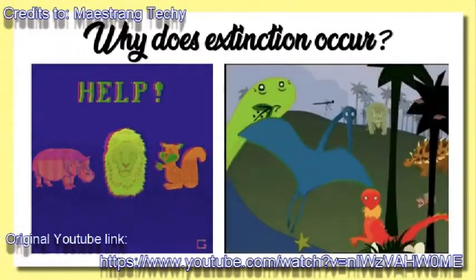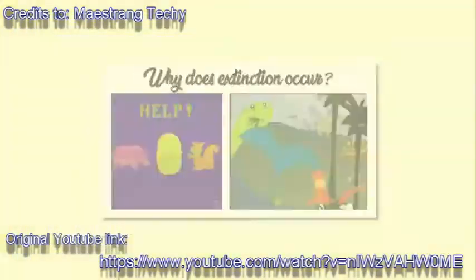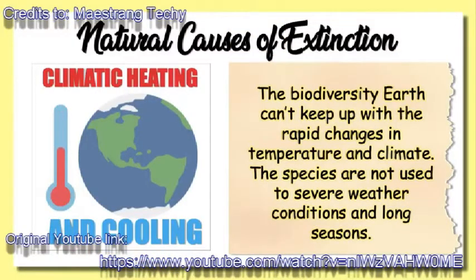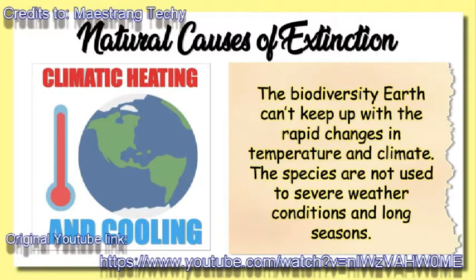The question is, why does extinction occur? Here are some of the natural causes. The first one is climatic heating and cooling. Climate change is caused by a number of things. The effect that climate has on extinction is very big. The biodiverse Earth cannot keep up with the rapid changes in temperature and climate. Species are not used to severe weather conditions, long seasons, and a changing chemical makeup of their surroundings. As more species die, it is only making it more difficult for the survivors to find food. The warmer climates we are used to in the present day are perfect for diseases and epidemics to thrive.